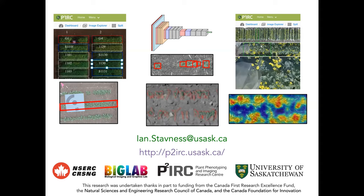A question about whether you can achieve similar resolution using a drone equipped with an RGB camera compared to the ground system: our UAV group flies a 100-megapixel Phase One camera, and at their flying altitude we get similar ground resolution to the tractor. It's possible, and other groups fly lower-resolution cameras but much closer to the canopy. Jesse Poland's group in particular has a workflow for very low altitude flights where the camera would be at roughly the same altitude as our sprayer boom.